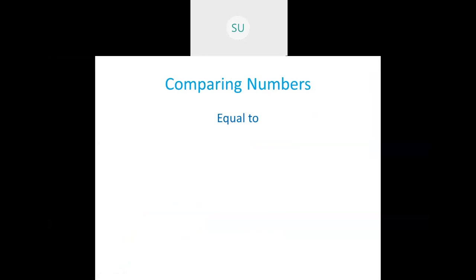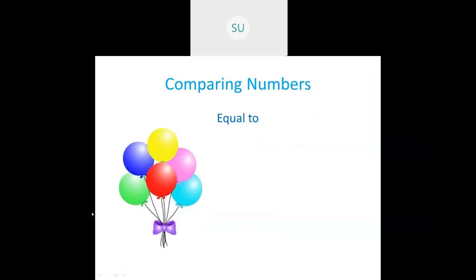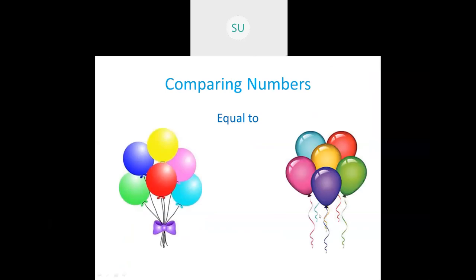Then we saw how to compare numbers — first, the meaning of equal to. Here we have a set of balloons: 1, 2, 3, 4, 5, and 6 balloons. And another set also has 1, 2, 3, 4, 5, 6 balloons. Both sets have 6 balloons, which means they are equal.